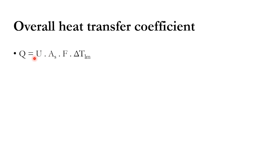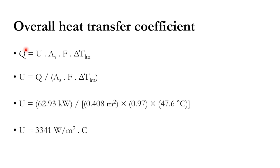Using Q = U·A·F·ΔT_LM, we solve for U = Q / (A·F·ΔT_LM). Substituting the known values gives U = 3341 W/m²°C. That is how we compute the overall heat transfer coefficient for a cross-flow system, which requires including the correction factor F due to its cross-flow nature.